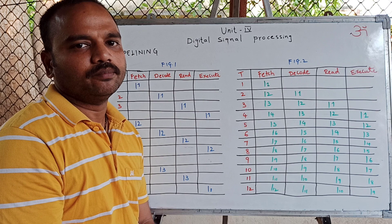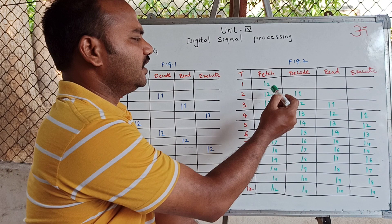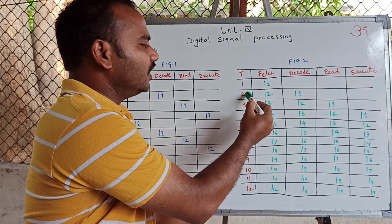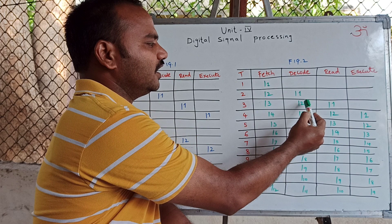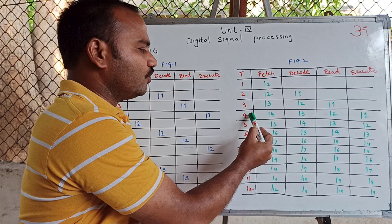Now I will explain you about a pipeline processor. Figure 2 shows the pipeline processor. In the first clock pulse, instruction L1 is fetched. In the second clock pulse, instruction L1 enters decode, whereas instruction L2 is fetched. In the third clock pulse, instruction L1 enters the read phase, instruction L2 enters the decode phase, and instruction L3 is fetched.